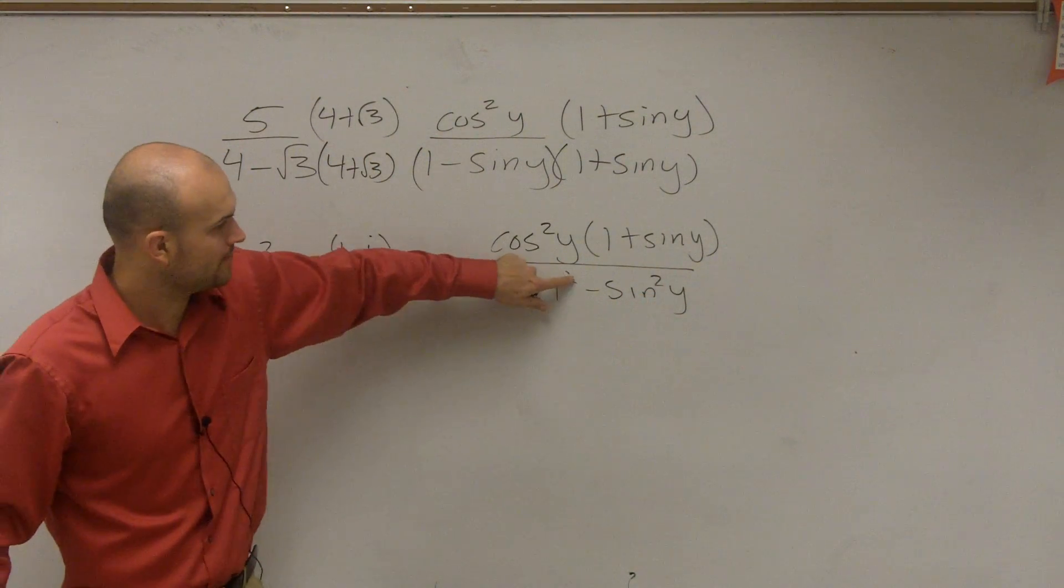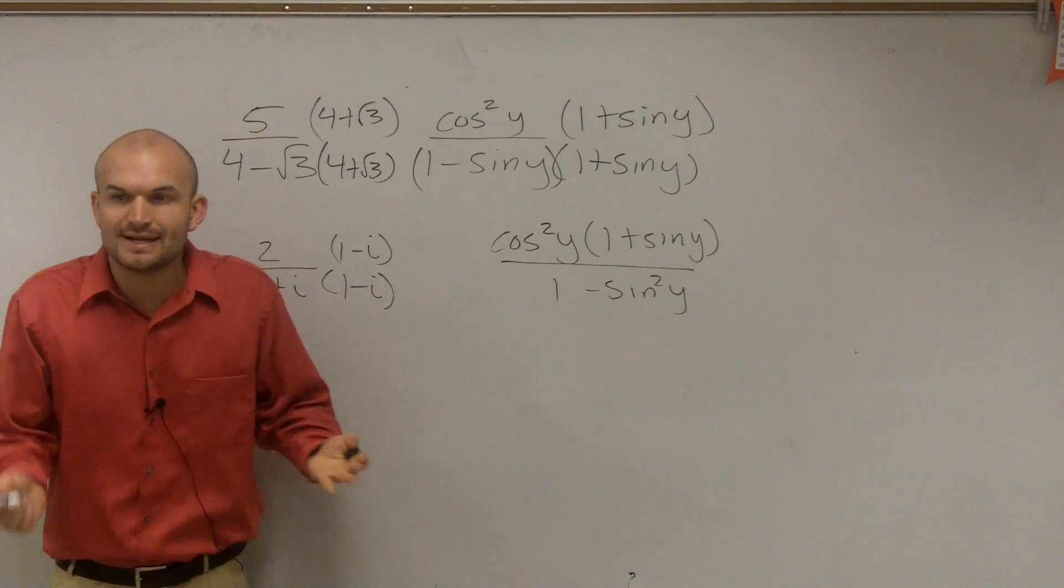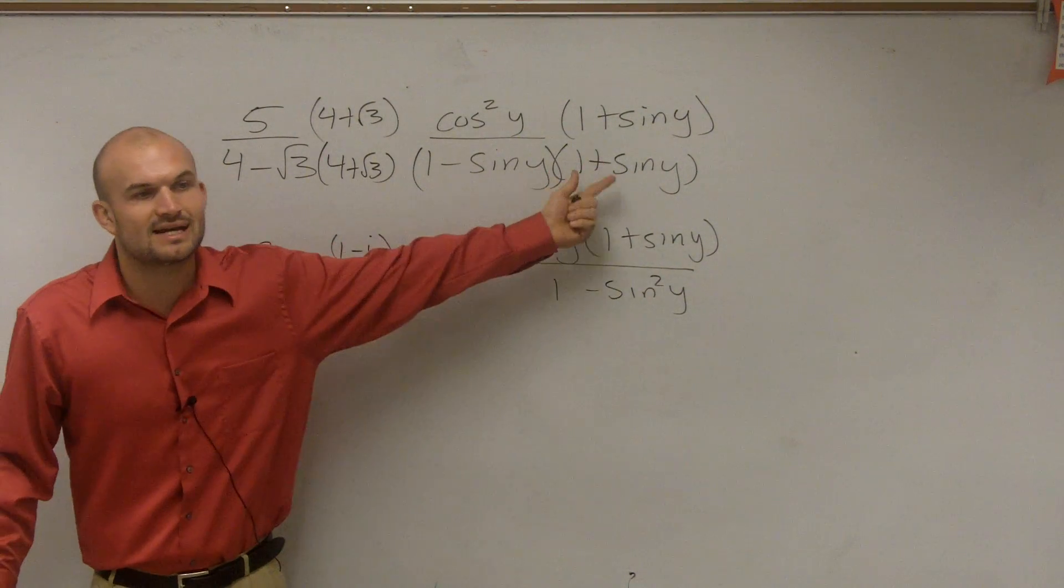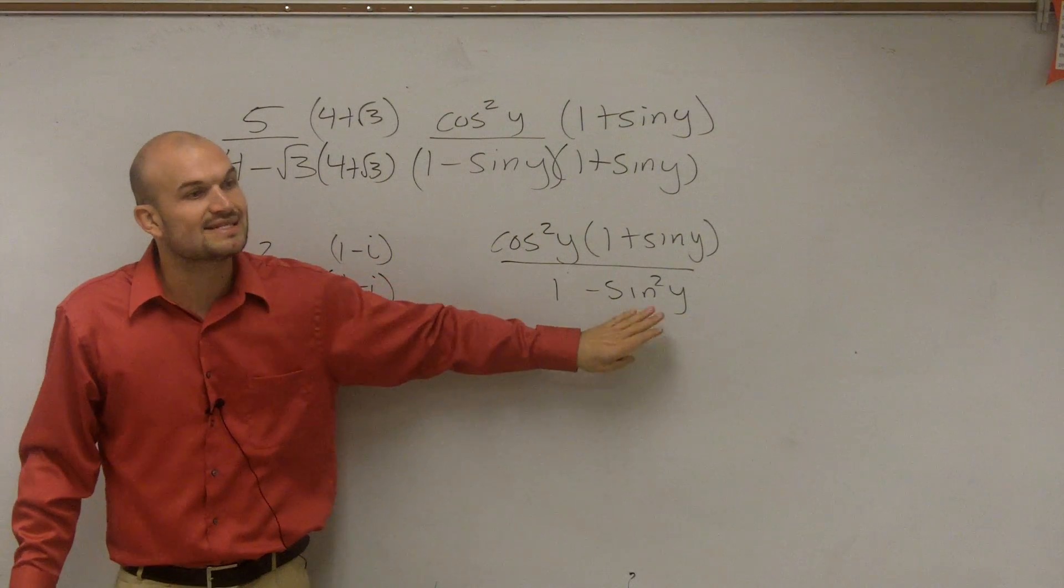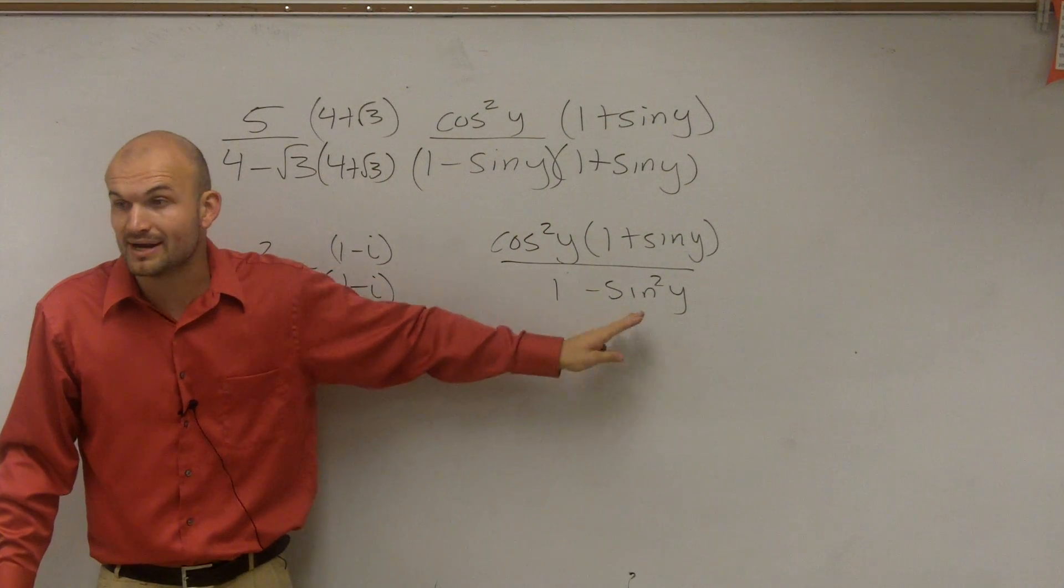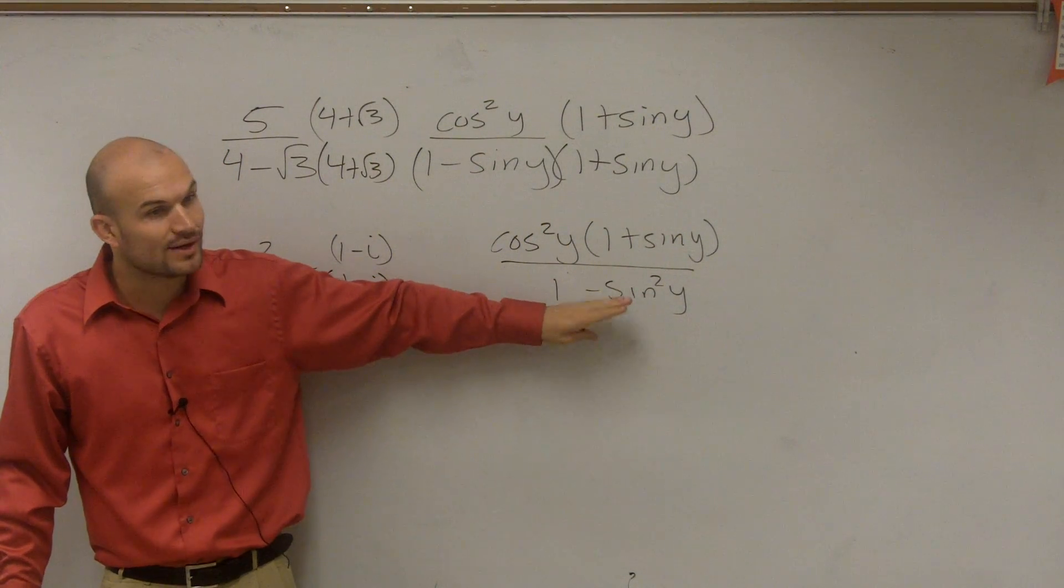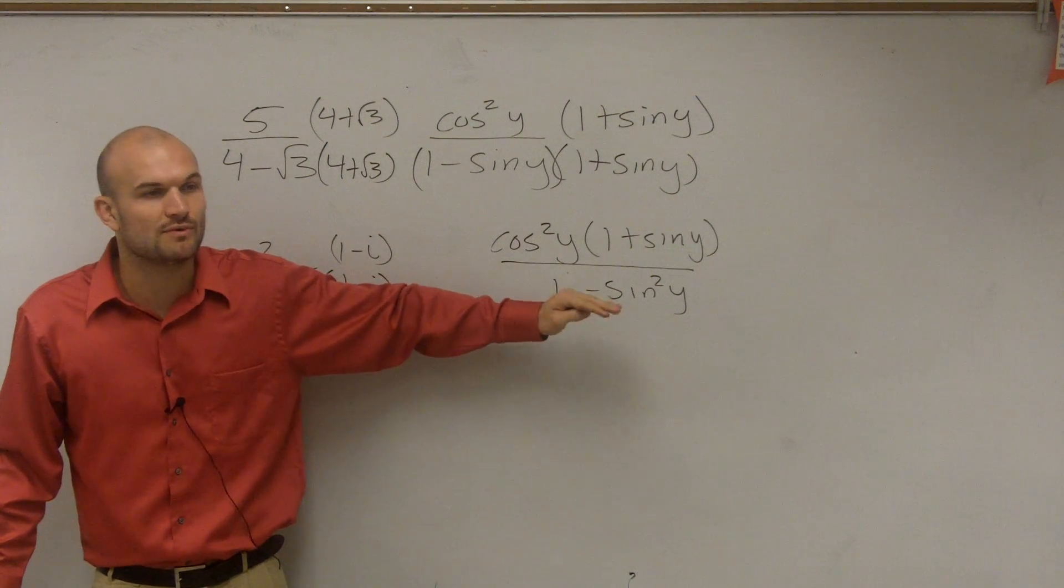Well, 1 squared is just 1, right? All right. So what I did is when I multiplied this by its conjugate, what I created was a sine squared, or 1 minus sine squared. And sine squared is very helpful because now we can use what identities?